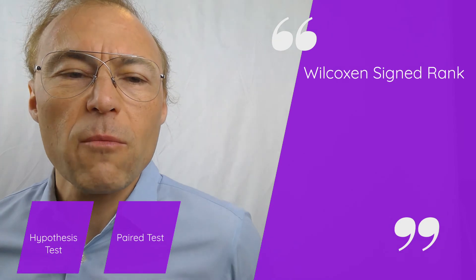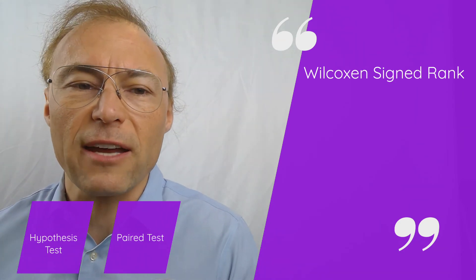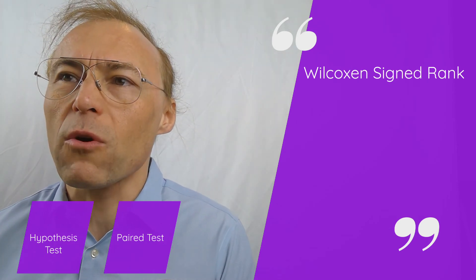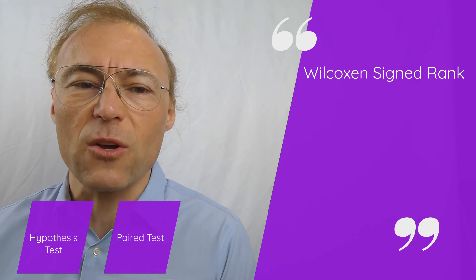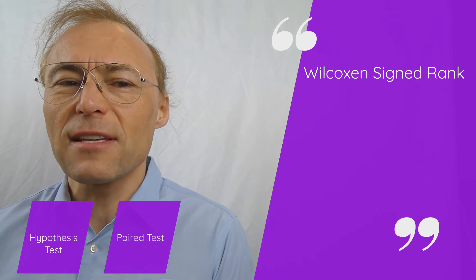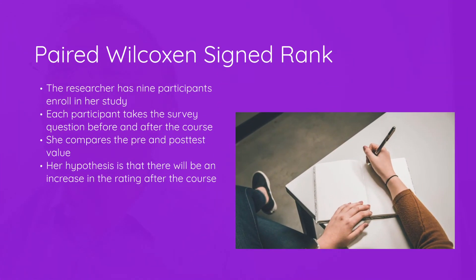You can see that we've used the Wilcoxon Signed Rank Test to find the median — in this case the median serves as the average of the Likert scale. We could also use a paired test. Perhaps our researcher sets up her study differently: nine participants enroll, and each takes the survey question both before and after the course. She will compare the pre- and post-test values, with a hypothesis that there will be an increase in rating after the course. This is a common pre- and post-test design for educational studies.